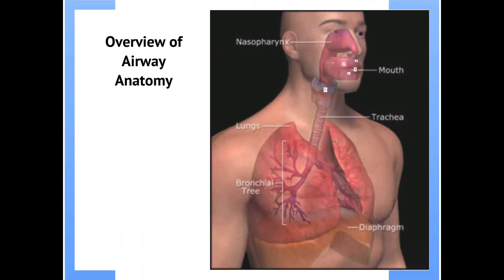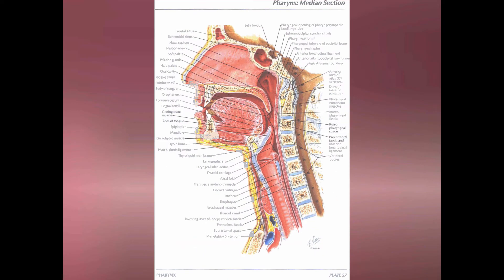Let's jump right into the anatomy. When we talk about the respiratory system, we're talking about the nasopharynx and the oropharynx bringing air into the lungs by way of the trachea. We'll talk about humidification and everything that happens at the nasopharynx level — that's to prepare air for being just the right temperature and humidity to be efficient and effective once it gets down to the level of the lungs.